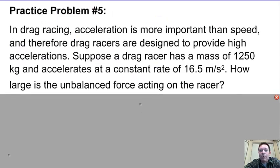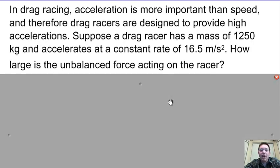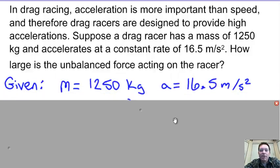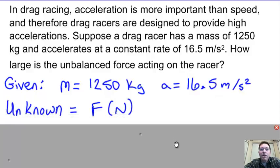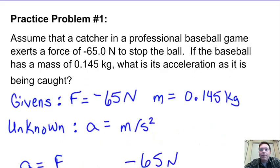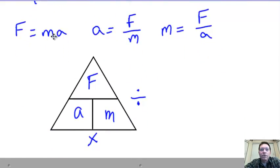Practice problem number five: in drag racing, acceleration is more important than speed, so drag racers are designed to provide high accelerations. Suppose a drag racer has a mass of 1,250 kilograms and accelerates at a constant rate of 16.5 meters per second squared. How large is the unbalanced force acting on the racer? Givens: mass equals 1,250 kilograms, acceleration equals 16.5 meters per second squared. Unknown: force in Newtons. So solving for force — force is equal to mass times acceleration.